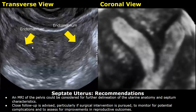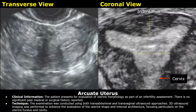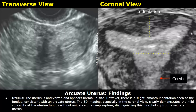This is a report for arcuate uterus. Clinical information: the patient presents for evaluation of uterine morphology as part of an infertility assessment. There is no significant past medical or surgical history reported. These are the findings: the uterus is anteverted and appears normal in size; however, there is a slight smooth indentation seen at the fundus, consistent with an arcuate uterus. The 3D imaging, especially in the coronal view, clearly demonstrates the mild concavity at the uterine fundus without evidence of a deep septum, distinguishing this morphology from a septate uterus.